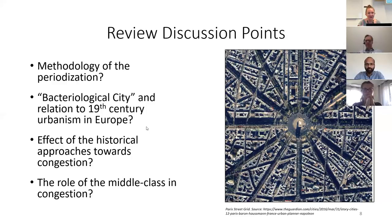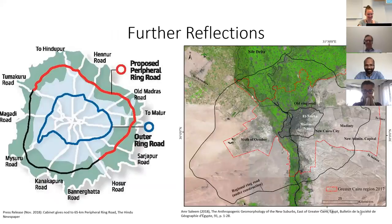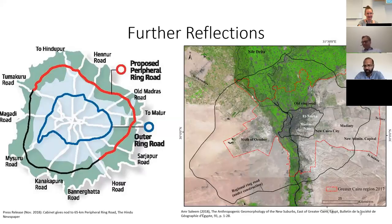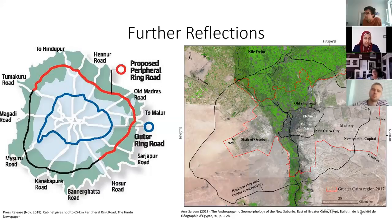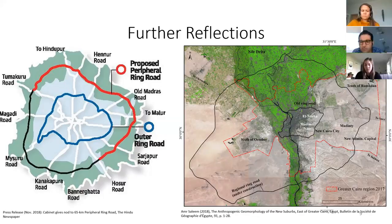Just to wrap up with a reflection — not part of our written review paper, but prompted by the book's historical background — I was struck by similarities between Bengaluru and my hometown, Cairo. Bengaluru, shown on the left, has an inner ring road in blue and a planned outer ring road in black and red. Cairo, on the right, also has an inner ring road in black and a much wider-scale outer ring road, similarly affecting urban planning in both cities.